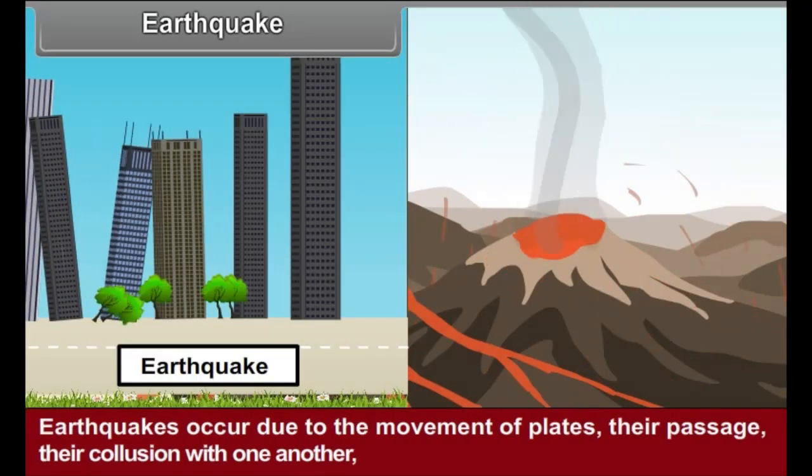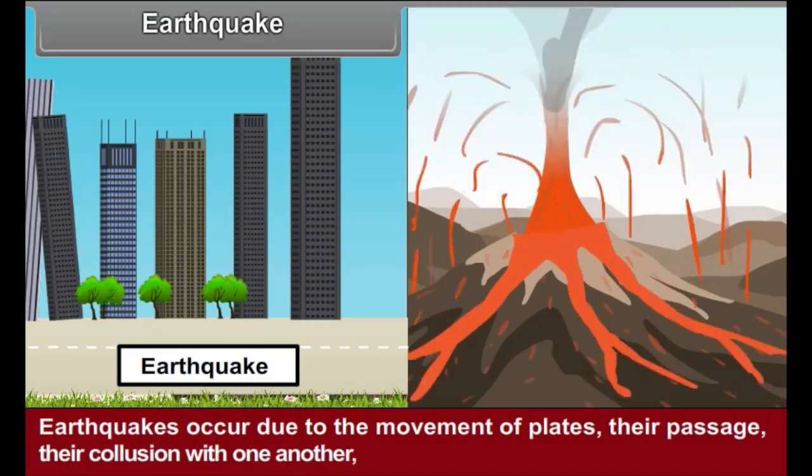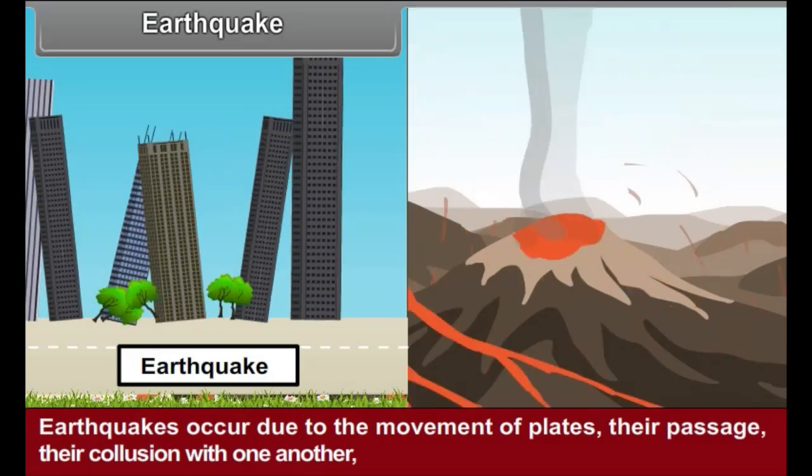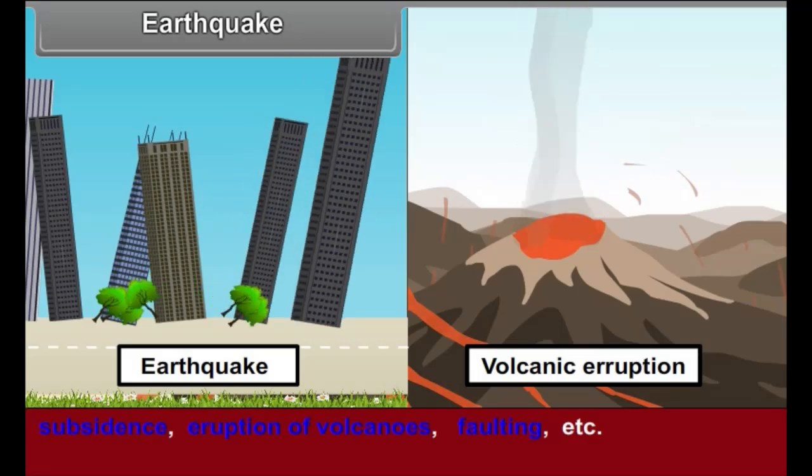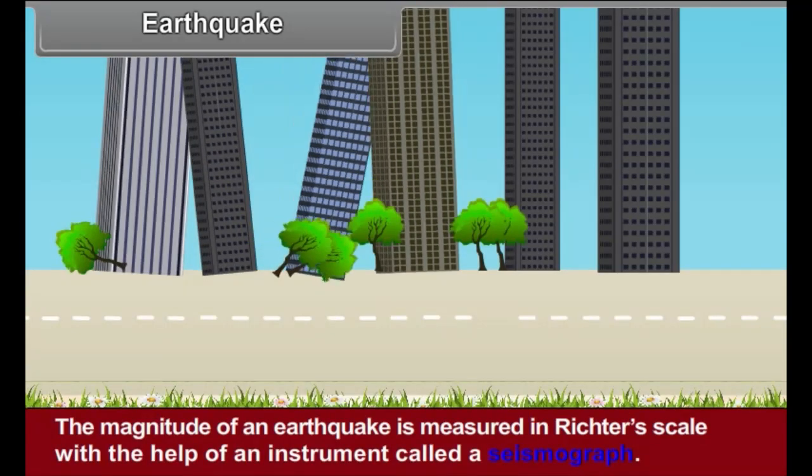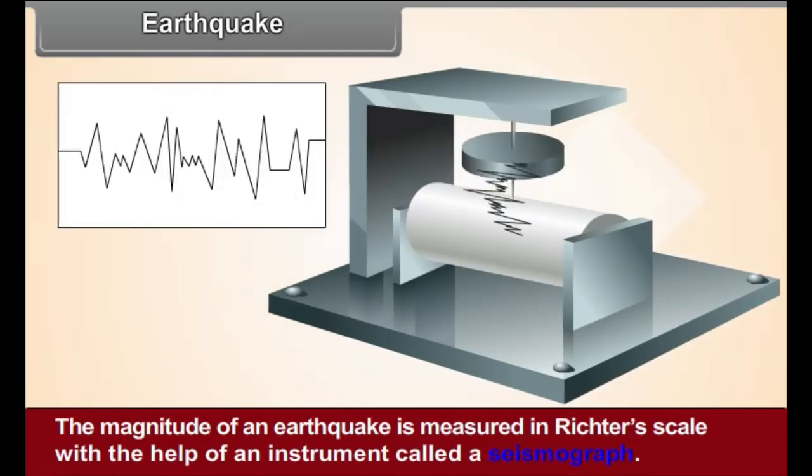Earthquakes occur due to the movement of plates, their passage, their collision with one another, subsidence, eruptions of volcanoes, faulting, etc. The magnitude of an earthquake is measured in Richter's scale with the help of an instrument called a seismograph.